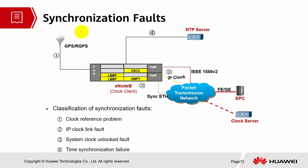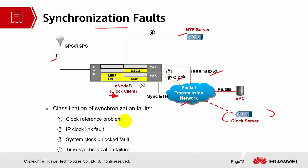Let's look into synchronization faults. These can be related to GPS or RGPS clock systems, an NTP server, an IP clock server, or IEEE standards — essentially from the main clock server towards the eNodeB client. The classification of synchronization faults includes: packet transmission network issues causing delay, packet loss, or latency; clock reference problems; IP clock link faults; system clock unlocked faults; or time synchronization failures.